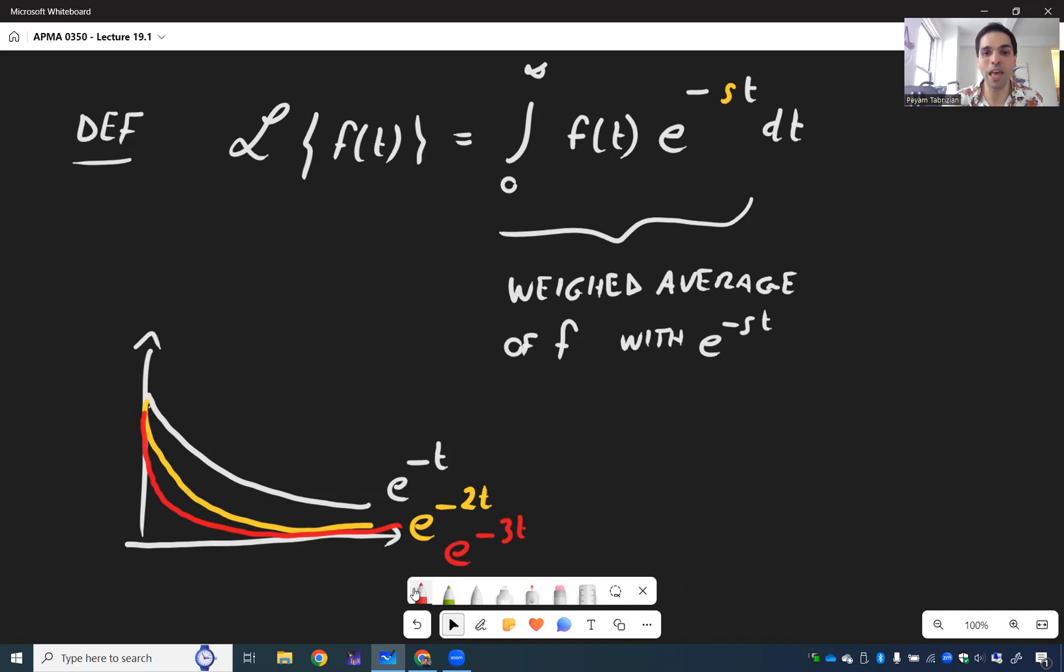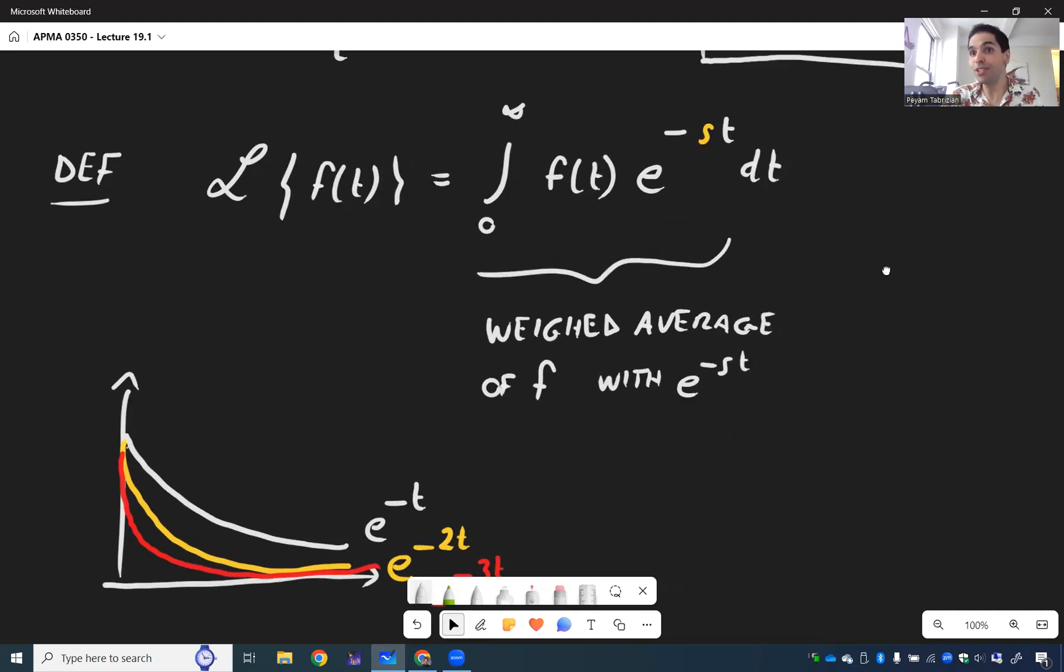And there's actually a cool demo that illustrates e to the minus st for various values of s. And the important thing to understand here is, since we integrate the t out, in the end, this will just become a function of s.